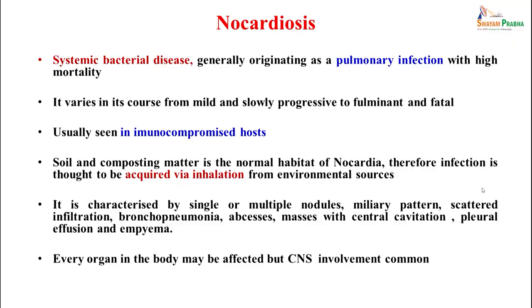Nocardiosis can be a systemic bacterial disease generally originating as a pulmonary infection with high mortality and spreading to other organs. It can progress from mild and slowly progressive to fulminant and fatal disease, usually seen in immunocompromised hosts. Soil and composting matter are the natural habitat, so infection is usually acquired by inhalation of the branching filaments from environmental sources. It can be seen as single or multiple nodules on the skin, miliary pattern in the lungs, scattered infiltration, bronchopneumonia, abscesses, masses with central cavitation, pleural effusion, or empyema.